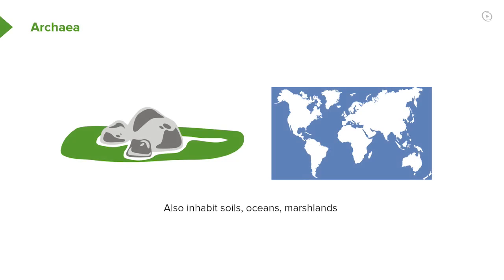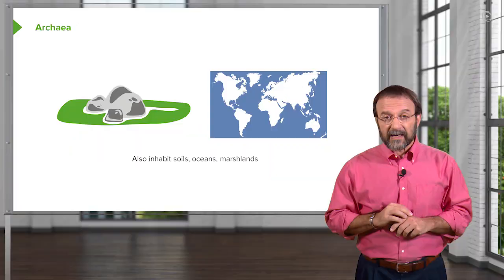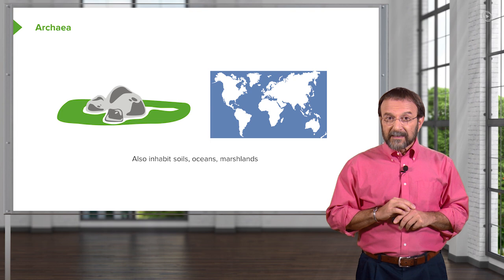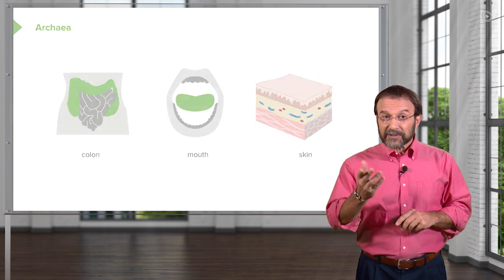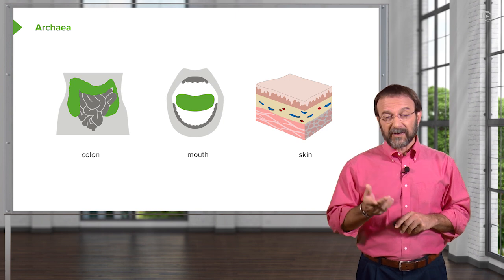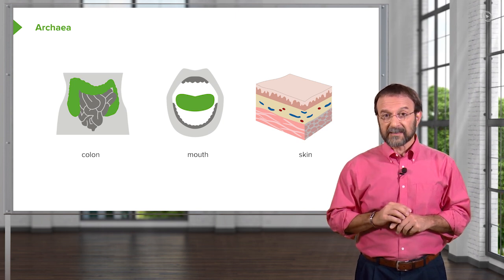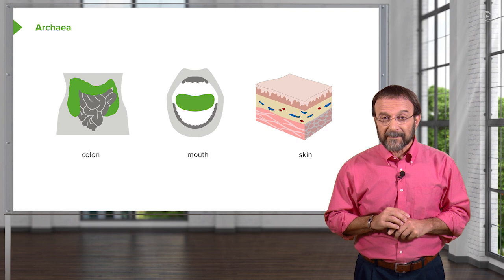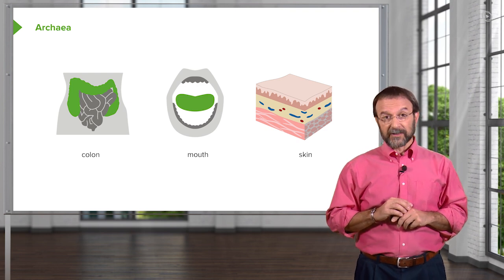But archaea are not always present in just extreme environments — some of them live more normally, like we do. You can find them in soils, in oceans, and in other wet areas like marshlands. They're also in us — in you and I. We contain archaea. You can find them in your colon, your large intestine, they're in your mouth, and they're also found on your skin.